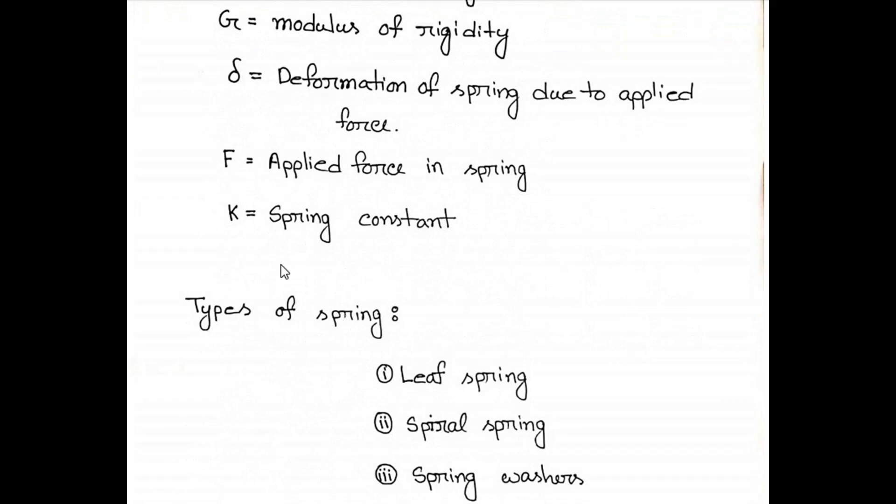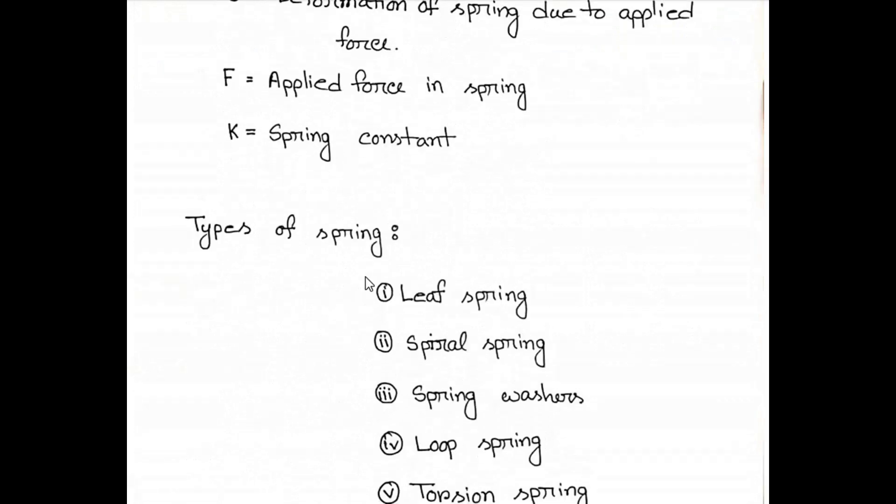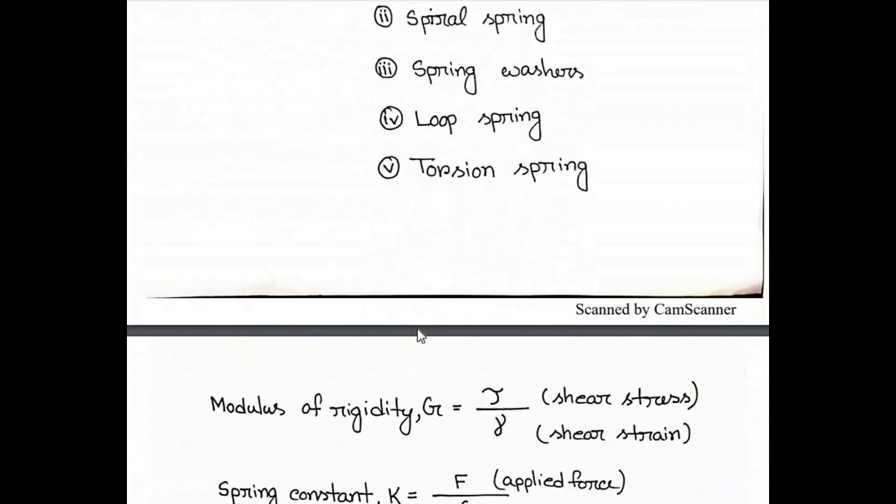There are various kinds of springs we see in everyday life, like leaf springs which we use in trucks or cars, spiral springs which are very common, spring washers, loop springs, and torsion springs in our hair clips.